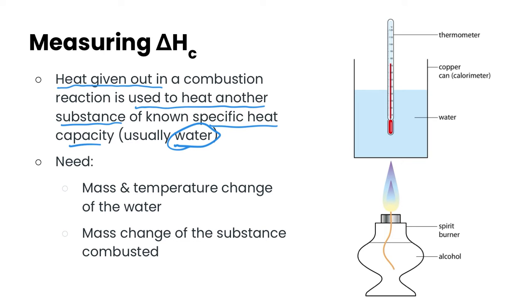So you can see the setup here where we would have whatever we're combusting down in this spirit burner. So it could be an alcohol here or it could be any kind of alkane, whatever we're combusting.